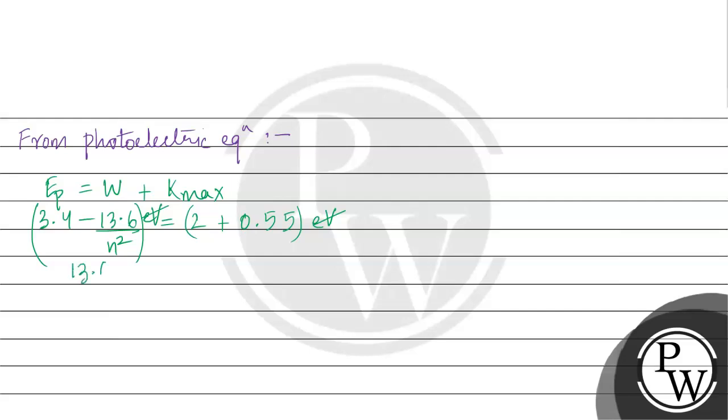This gives 13.6/n² = 3.4 - 2 - 0.55 = 0.85. Therefore n² = 13.6/0.85 = 16, so n = 4.